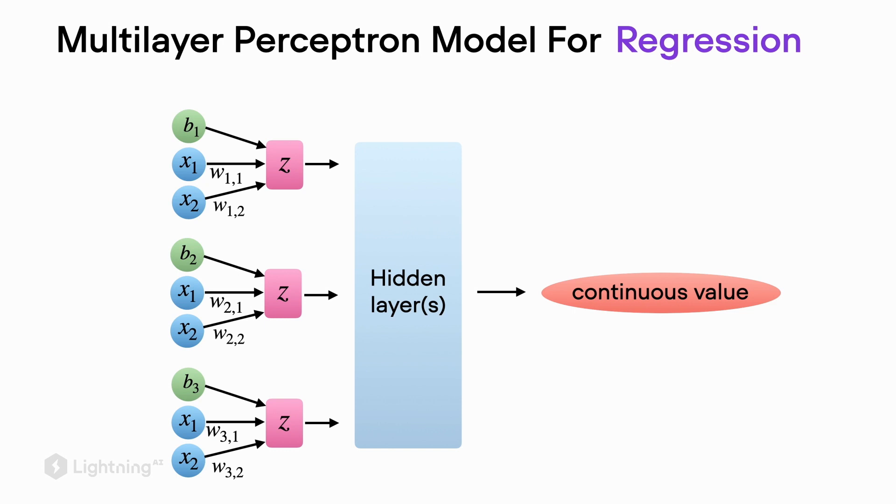The architecture for regression would look like as follows, where we still have the net inputs on the left-hand side followed by the hidden layers. As you can see here, the corresponding architecture for regression is a little bit simpler than the classification architecture.